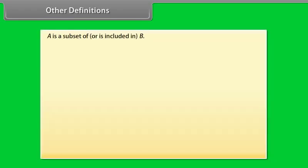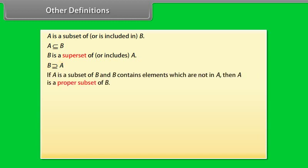Other definitions. A is a subset of or is included in B, denoted by this symbol. If A is a subset of B and B contains elements which are not in A, then A is a proper subset of B.